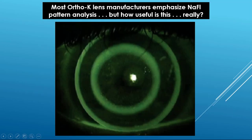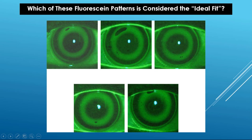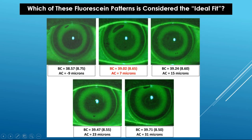Much ado is made by most Ortho-K lens manufacturers of the importance of obtaining the proper fluorescein pattern in order to achieve a successful result. There are three problems with relying on fluorescein patterns to predict a successful refractive result. One is that the human eye cannot detect the presence of fluorescein with less than 20 microns of tear layer thickness, so it is extremely difficult to distinguish even minuscule differences in fitting patterns. Here we see fluorescein patterns of five lenses with different base curves on the same eye. Which of them is the ideal fit that will produce the best result? The ideal fit is the one in the top row middle image with seven microns of apical clearance.